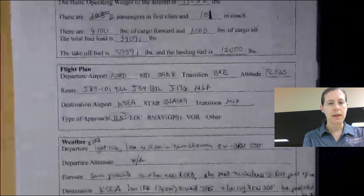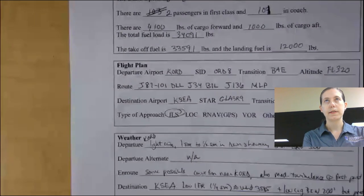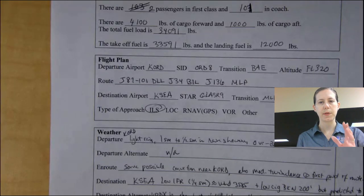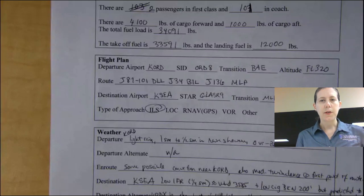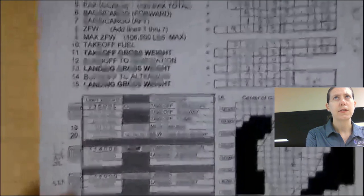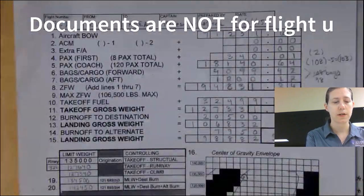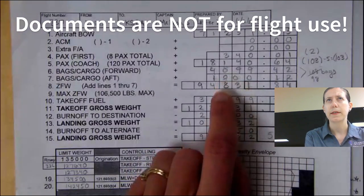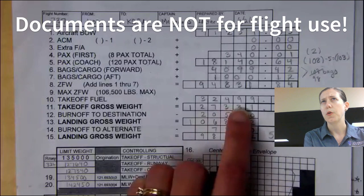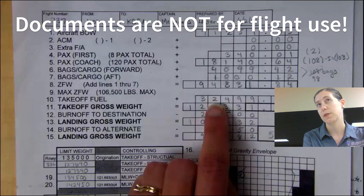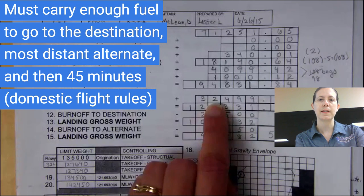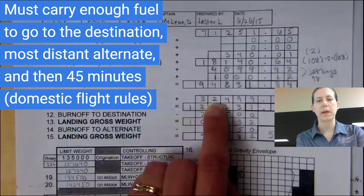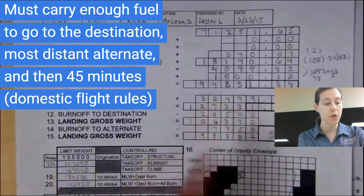Now, we did have some issues loading the aircraft on account of how much fuel I had to put on for the two alternates. We had 116 passengers booked, but unfortunately because of the alternate fuel requirement I had to bump some of those people off the flight. Our fuel load is approximately 32,500 pounds because we're carrying enough fuel to go from Chicago to Seattle, then to our most distant alternate — San Jose, California — and then another 45 minutes for our domestic reserve. So we've got plenty of fuel on board today.